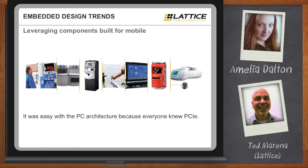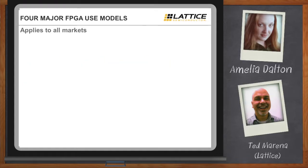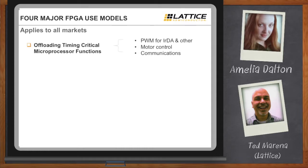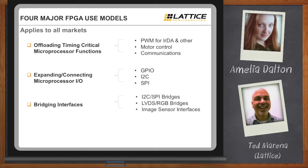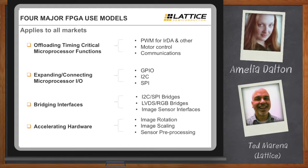You guys are an FPGA company — so what are we talking about here? There are four typical functions people do with FPGAs: offloading critical functions a microprocessor isn't well suited for; IO expansion and connectivity where processors don't have enough pins; bridging applications where one bus doesn't match another; and hardware acceleration that an FPGA is well suited to do but a processor isn't.